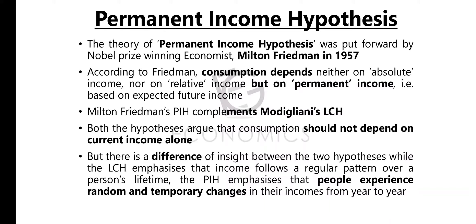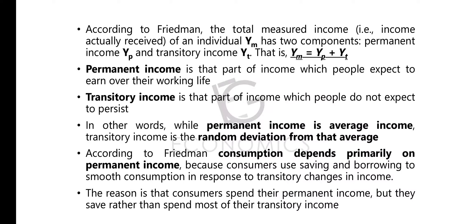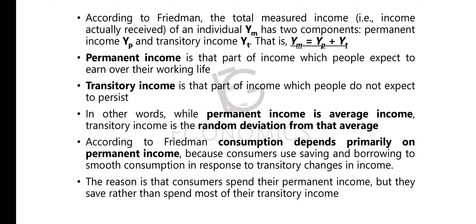According to Friedman, the total measured income (Ym) — that is, income actually received by an individual — has two components: permanent income (Yp) and transitory income (Yt). The equation is: Ym = Yp + Yt.